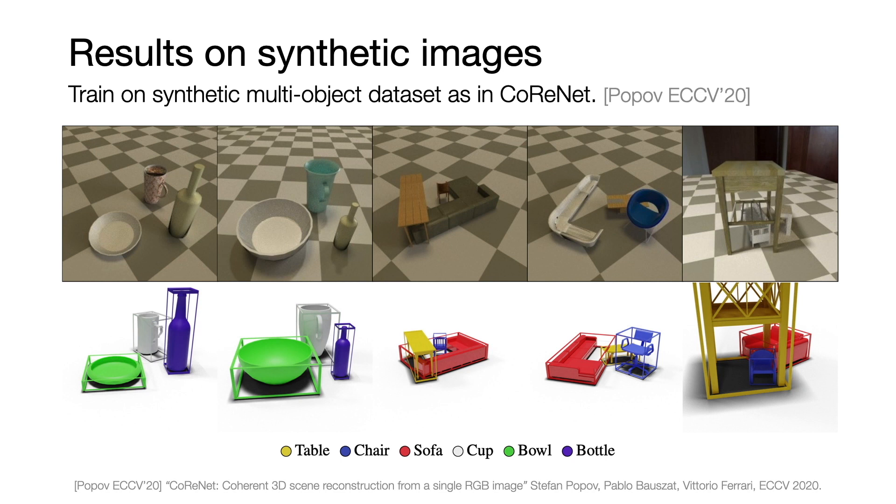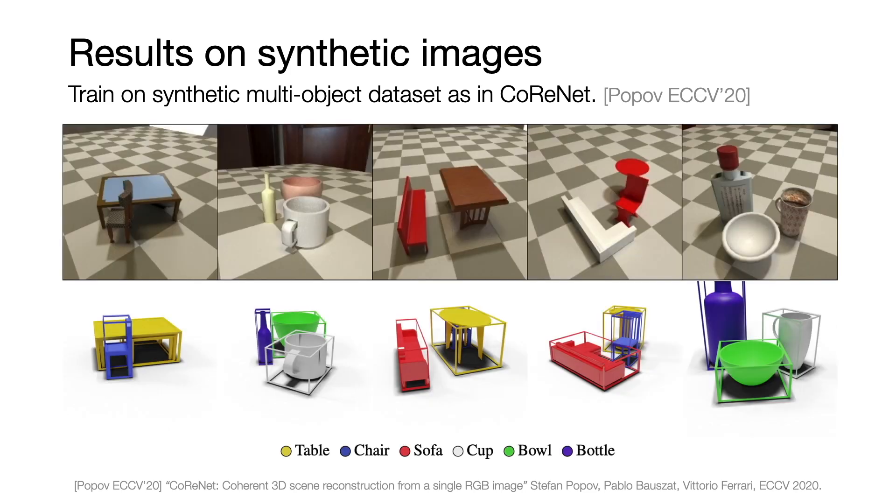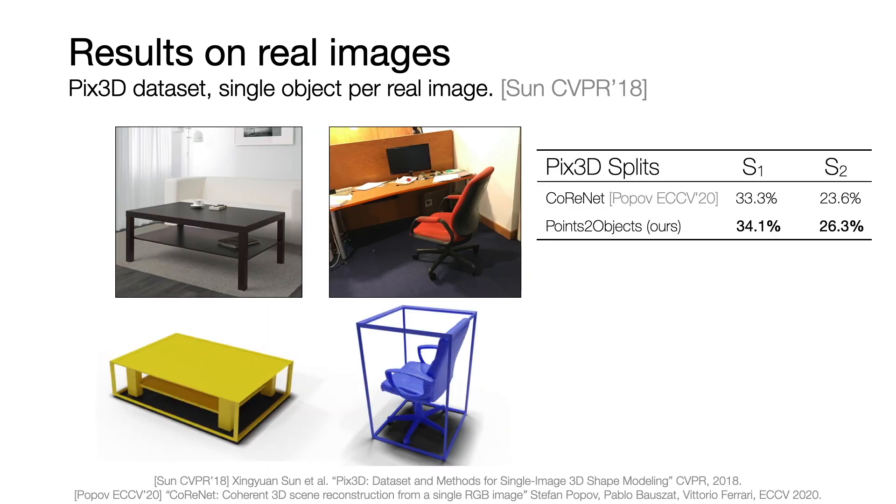We train and evaluate our approach on synthetic photorealistic renderings of multiple ShapeNet objects that are placed at random locations on the ground plane, with random scale, rotation and without intersection. We also train and evaluate our approach on the realistic single object dataset PIX3D and outperform previous state-of-the-art CoReNet.